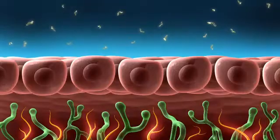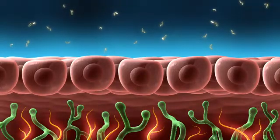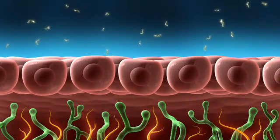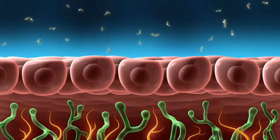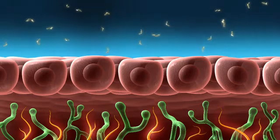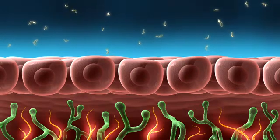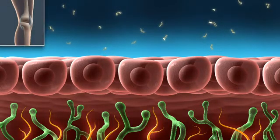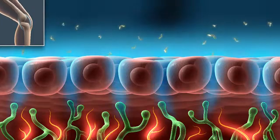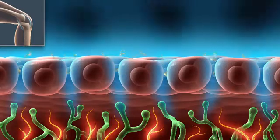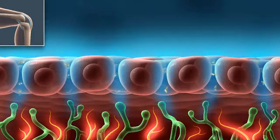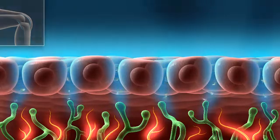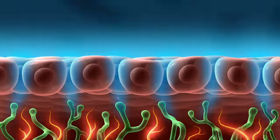Osteoarthritis, also known as OA, is a very common degenerative joint disease. Patients with OA often have low levels of hyaluronic acid, which can lead to loss of viscosity in the joint, reduced ability to regulate fluid flow, and chronic pain, shown here in pulsating red.